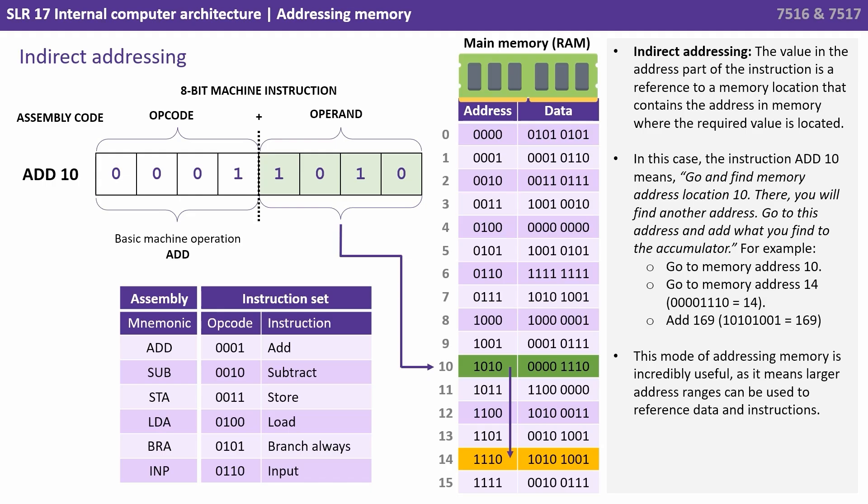So for example we'd go to memory address 10 and in there we find the value 14. We therefore go to memory address 14 and in there we find the value 169, which is what we actually add. This mode of addressing memory is incredibly useful as it means larger address ranges can be used to reference data and instructions.